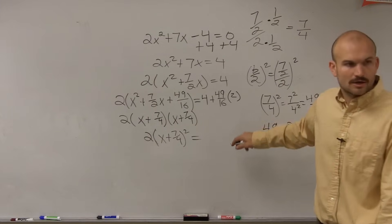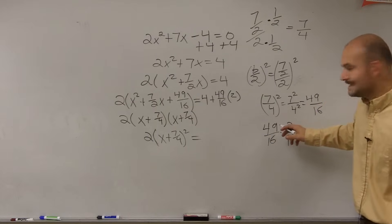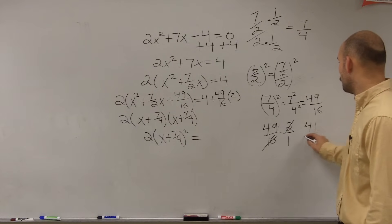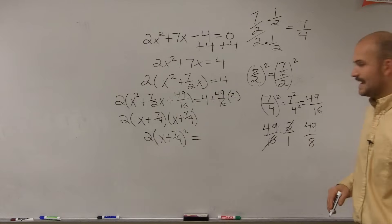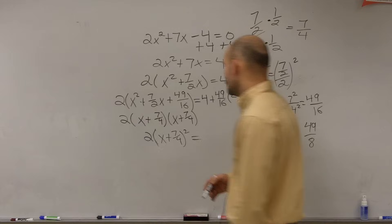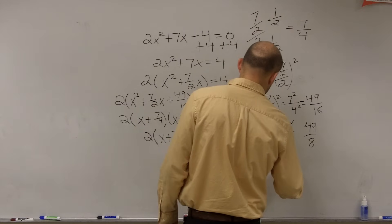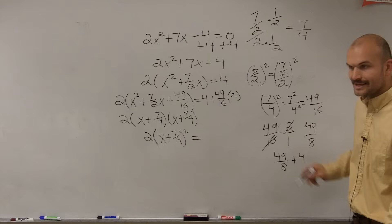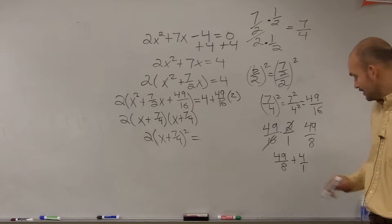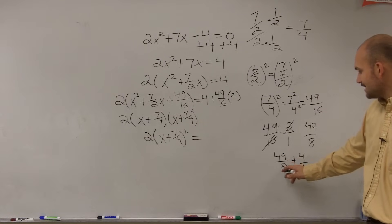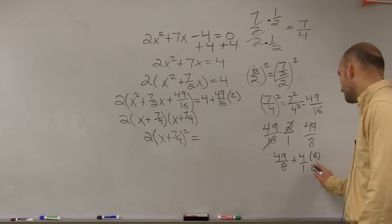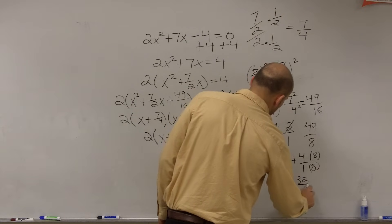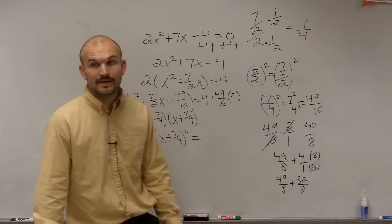So first I do 49-sixteenths times 2. You could multiply to get 98 over 16, or divide top and bottom by 2 to get 49-eighths. Then I have 49-eighths plus 4. To add those I need the same denominator, so 4 becomes 32-eighths. Therefore 49-eighths plus 32-eighths equals 81-eighths.